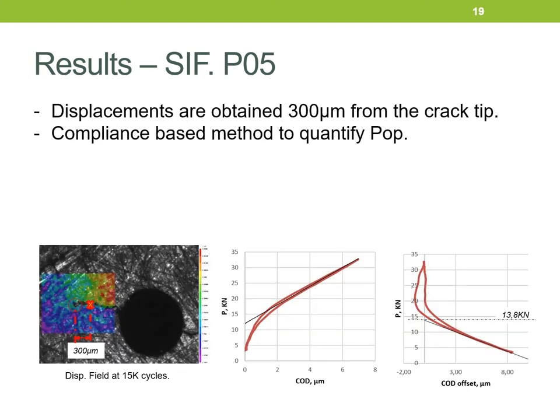This slide shows the displacement field of the crack at 15,000 cycles. The first plot is load versus COD in micrometers, and the second shows the procedure to evaluate the opening load during the experiment, giving a value in this case of 13.8 kilonewtons.